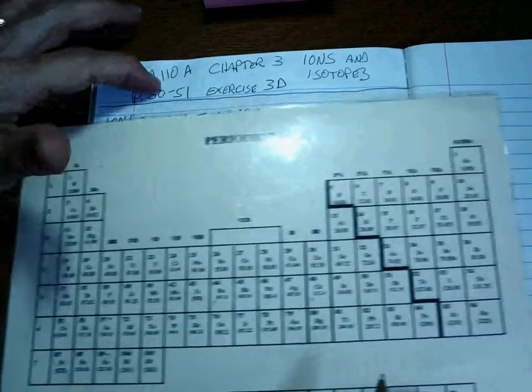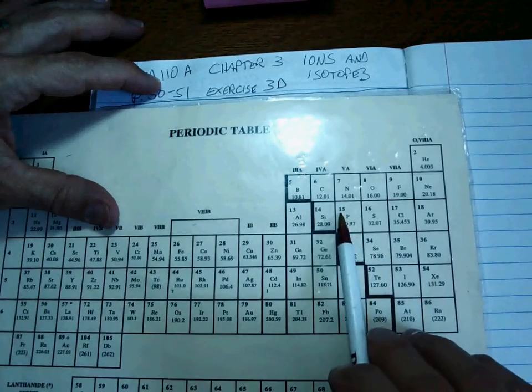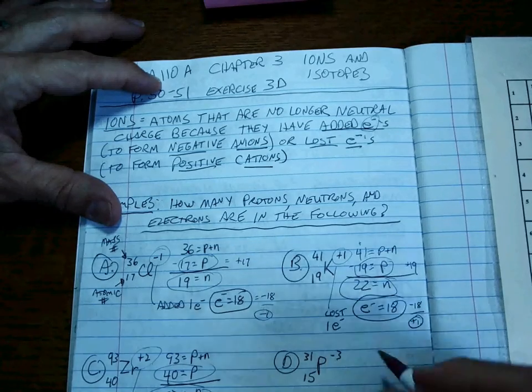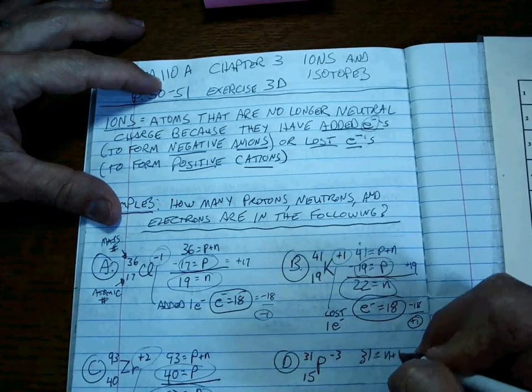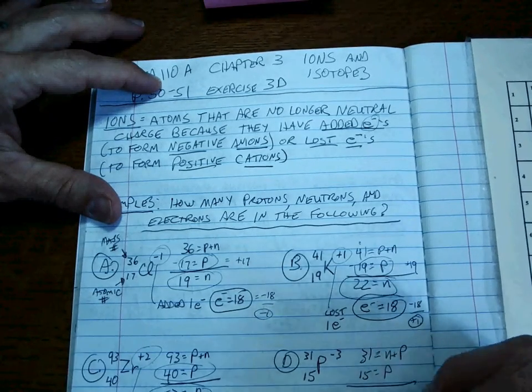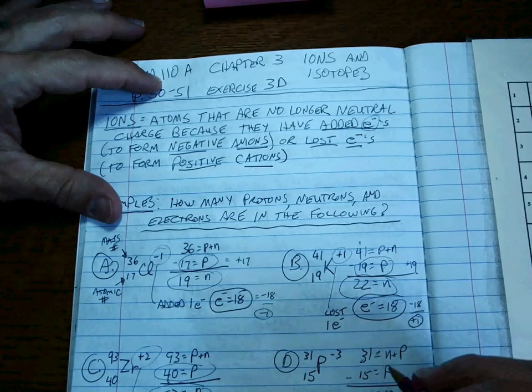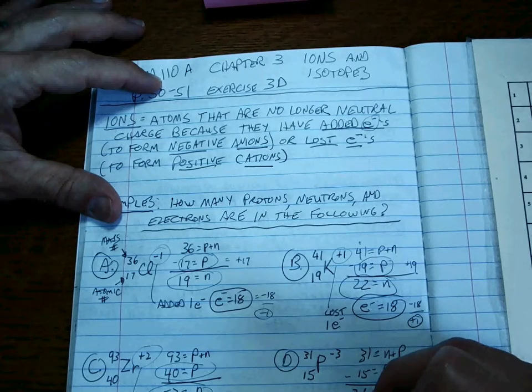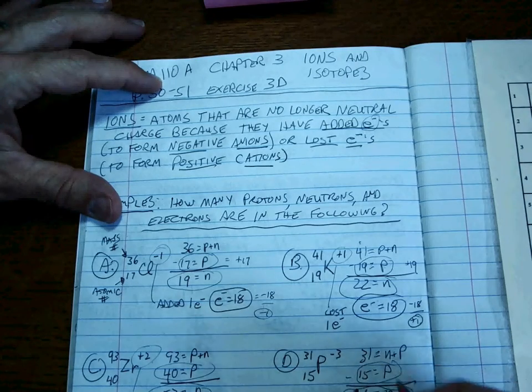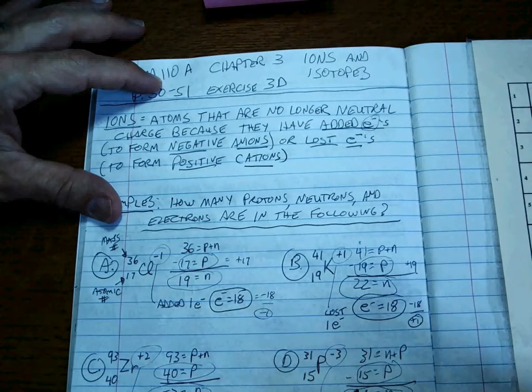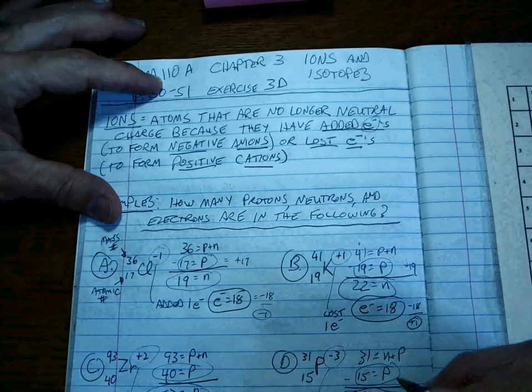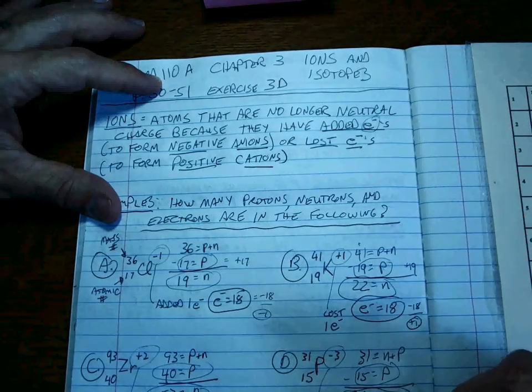Phosphorus. There it is. Element 15 off the periodic table. That's the atomic number. So 31 is the protons plus neutrons, the mass number. 15 is the number of protons. We subtract those two to get the number of neutrons, 16. So there's 16 neutrons, 15 protons. A minus three means we got three extra negatives, which means we've added three electrons. Added three means 18 is the number of electrons.